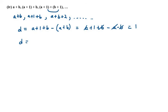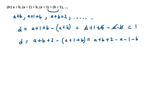Now we need to find the difference between the third term and the second term: (a+b+2) minus (a+1+b), which gives a+b+2 minus a minus 1 minus b. B and b cancel out, a and a cancel out, and 2 minus 1 is 1. The difference is the same at every point, so it forms an AP.